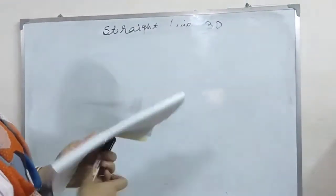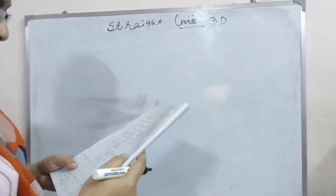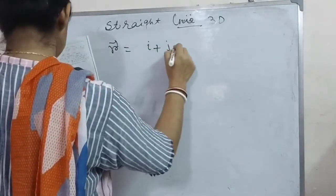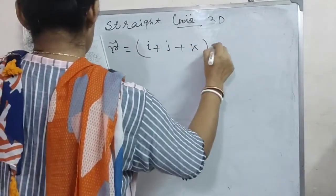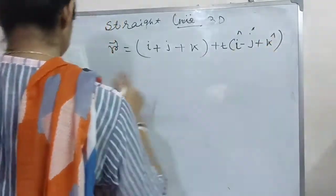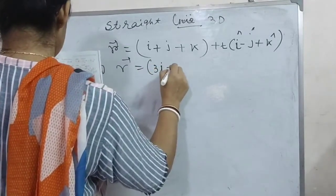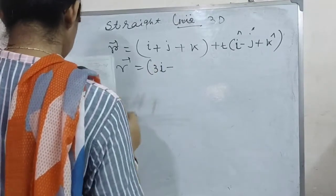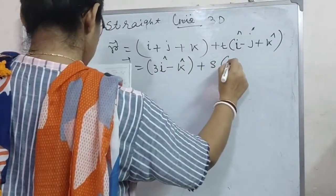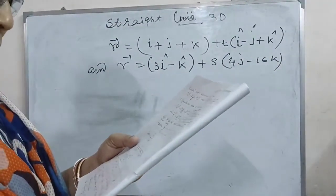Hello students of class 12. This video is the continuation part of straight line 3D. We have two lines: r equal to i plus j plus k plus t(i minus j plus k) and r equal to 3i minus k plus s(4j minus 16k). We need to show these lines intersect and find the position vector of their point of intersection.